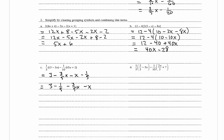Now we combine like terms: 3 minus 1/5 minus 3/5 x minus x. For the constants, using a common denominator of 5, we write 3 as 15/5, so 15/5 minus 1/5 equals 14/5. For the x terms, negative 3/5 x minus x — writing negative 1 as negative 5/5 — gives negative 3/5 minus 5/5 equals negative 8/5. So the answer is 14/5 minus 8/5 x.